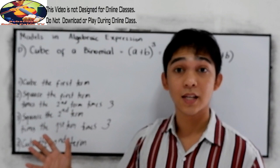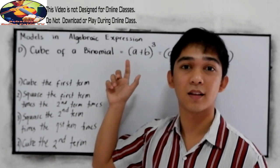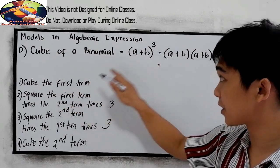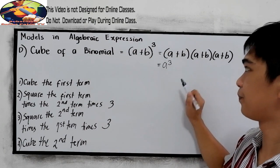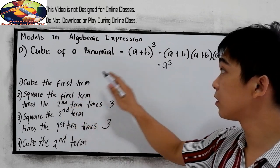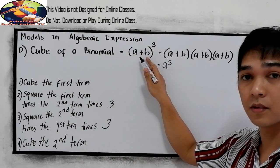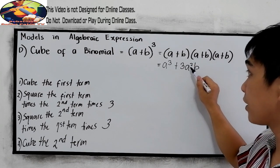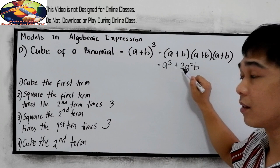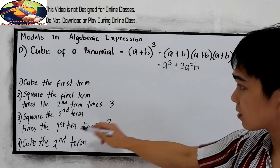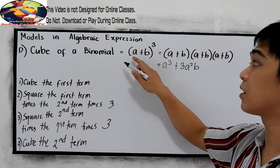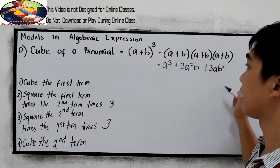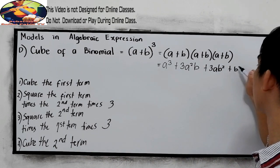Now let us apply our shortcut for the cube of a binomial. Our answer must be: cube the first term — so a cubed. Next, square the first term times the second term times 3 — so we have 3a²b. Then square the second term times the first term times 3 — positive 3ab². And last, cube the second term — plus b cubed.